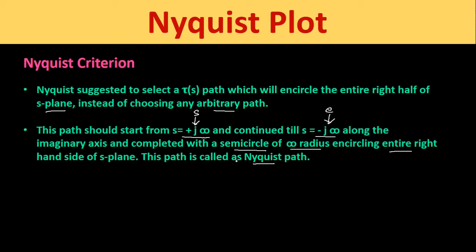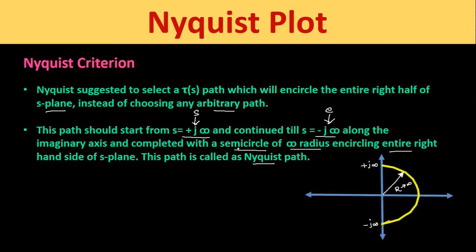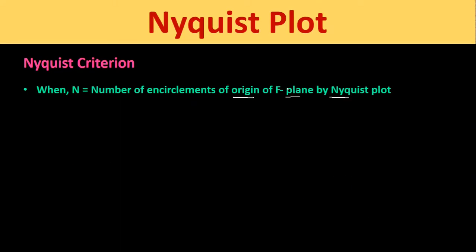This path is called the Nyquist path, as shown in the figure. We can see a semicircle of radius infinity, and on the imaginary axis the range is from +j∞ to -j∞. This semicircle represents the Nyquist path. We already studied this in the last class when we studied the mapping theorem: N equals the number of encirclements of the origin of the F-plane by the Nyquist plot.